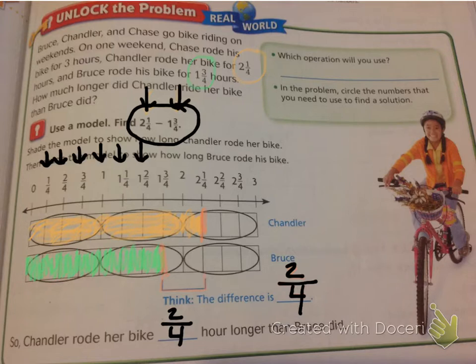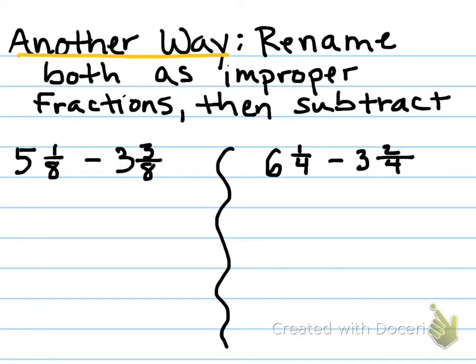Let's take a look at another strategy. Another way: rename both as improper fractions then subtract. So what do we mean is let's look at this problem right here. 5 1/8 take away 3 3/8. Now once again, our numerators, one cannot take away three. So what this strategy is saying is you're going to need to rename both of these mixed numbers as improper fractions.